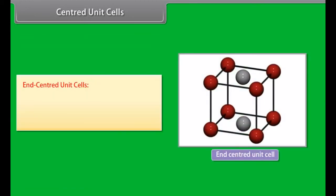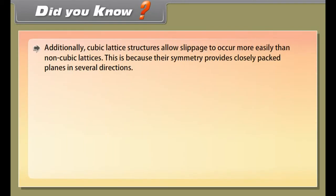In graphite, carbon atoms are arranged in different layers, and each atom is covalently bonded to three of its neighboring atoms in the same layer, which can slide one over the other. This makes graphite a soft solid and a good solid lubricant.